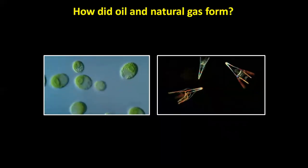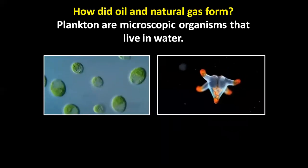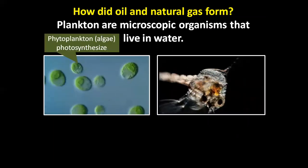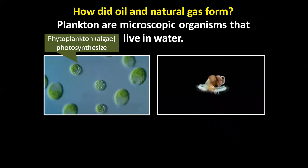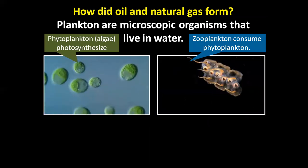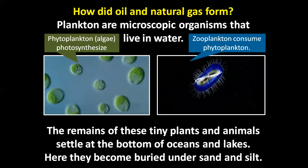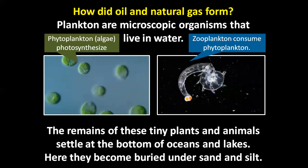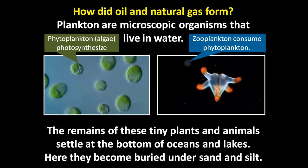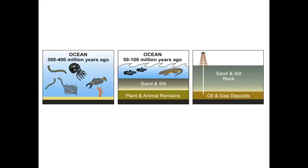How did oil and natural gas form? Plankton are microscopic organisms that live in water. Phytoplankton algae photosynthesize, and zooplankton consume phytoplankton. The remains of these tiny plants and animals settle at the bottom of oceans and lakes, where they become buried under sand and silt.